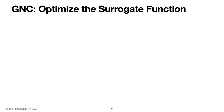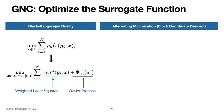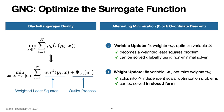A natural question is how to optimize the surrogate function. We leverage Black-Rangarajan duality, which states that the surrogate function is equivalent to the sum of two terms: a weighted least squares term and a function of the weights called the outlier process. Using this decoupled formulation, we apply alternating minimization. At the first step, we fix the weights and optimize X — a weighted least squares problem solvable globally using existing non-minimal solvers. At the second step, we fix X and optimize the weights, which splits into n independent scalar optimizations solvable in closed form.